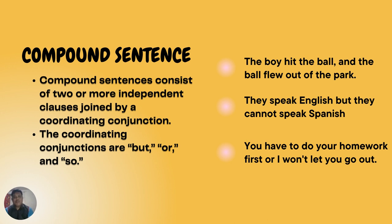Now we move to the next type: the compound sentence. A compound sentence consists of two or more independent clauses joined by a coordinating conjunction — such as 'but,' 'or,' 'and,' and 'so' — or it can also be conjoined by the use of a semicolon. Each of these clauses would form a sentence on its own.